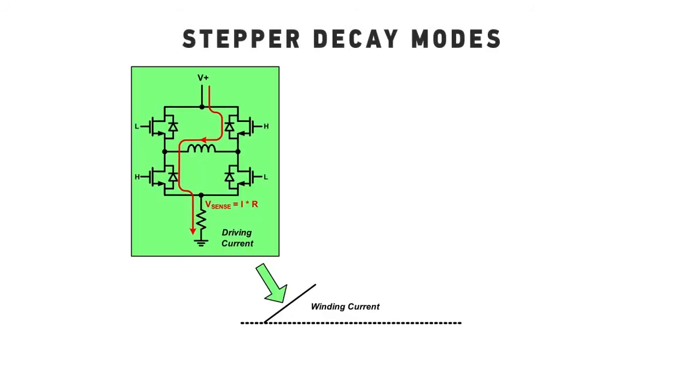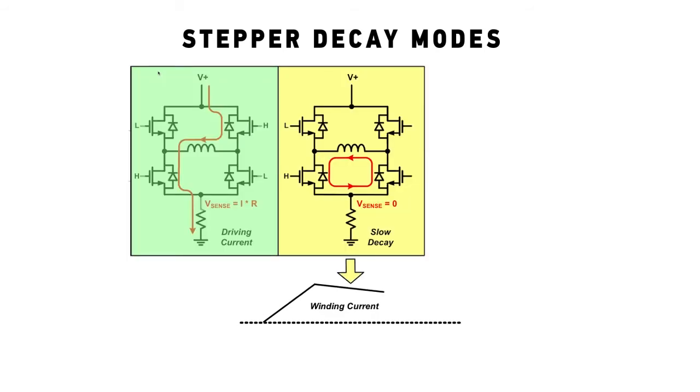In conventional drivers that sense the winding current using an external shunt resistor, the current is measured only during the PWM on-time. During slow decay, there is no current flow through the shunt, so current cannot be measured.